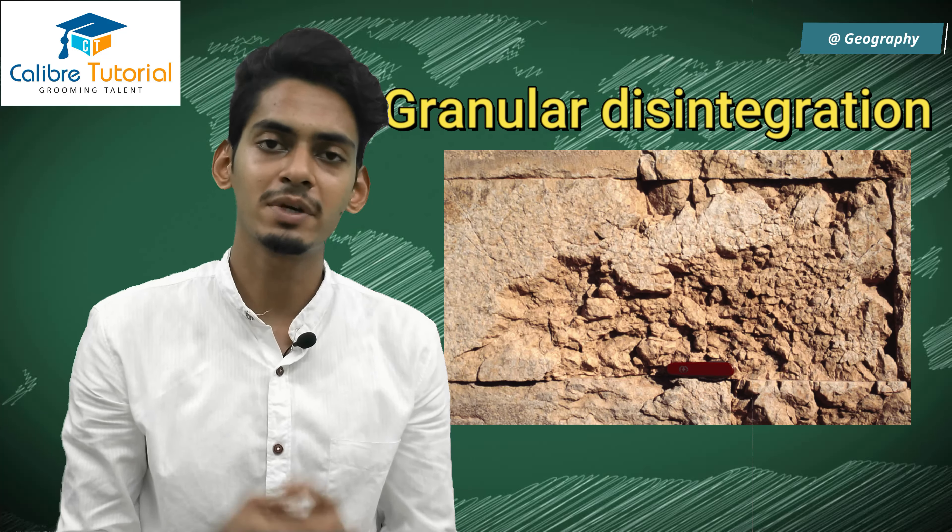Previously we saw gradation — degradation and aggradation. Now we will see denudation. Basically, denudation has four steps: weathering, erosion, transportation, and deposition. In river denudation, rock particles are ground into small pieces and are eroded and transported to another place.